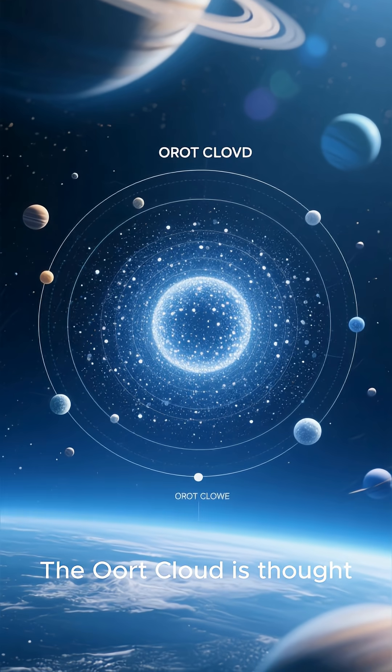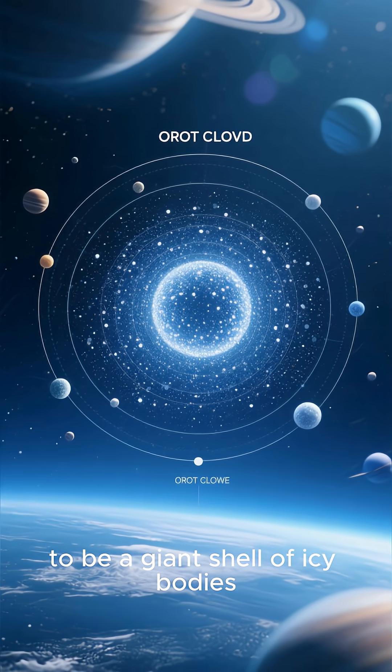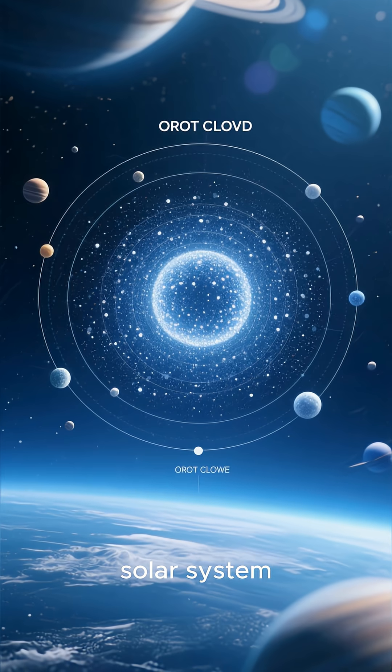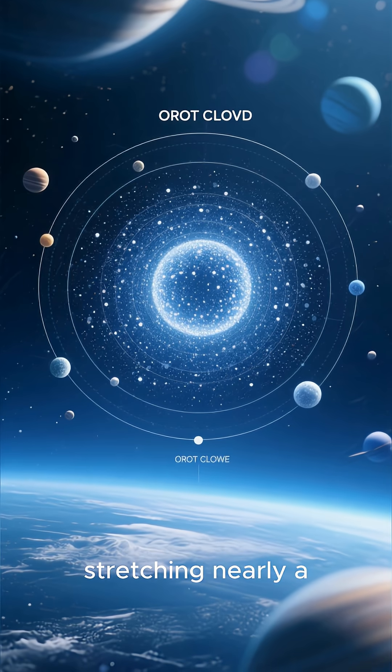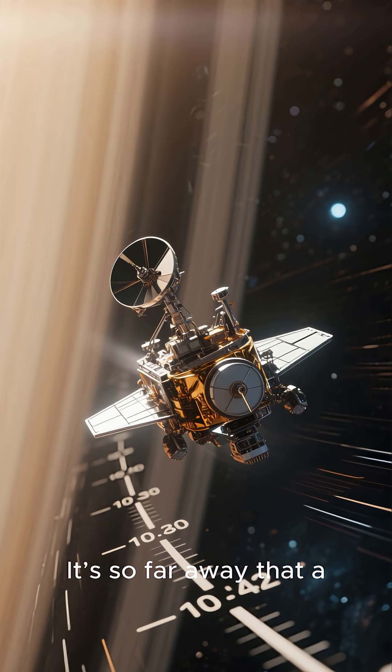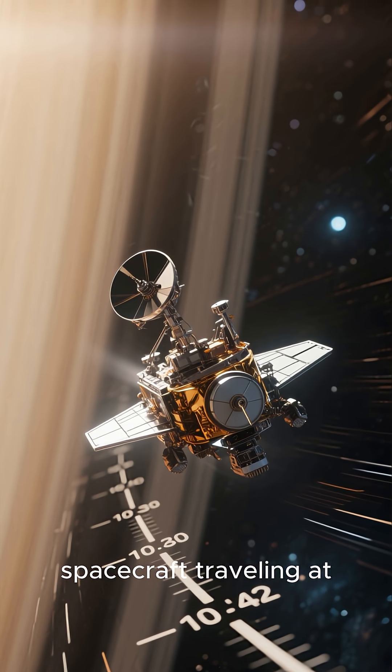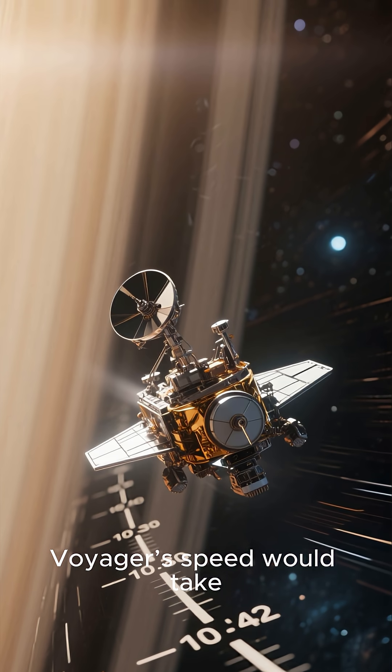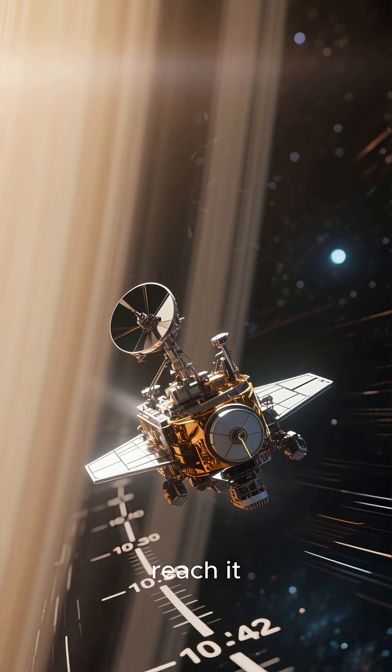The Oort Cloud is thought to be a giant shell of icy bodies surrounding our entire solar system, stretching nearly a light year from the sun. It's so far away that a spacecraft travelling at Voyager's speed would take thousands of years just to reach it.